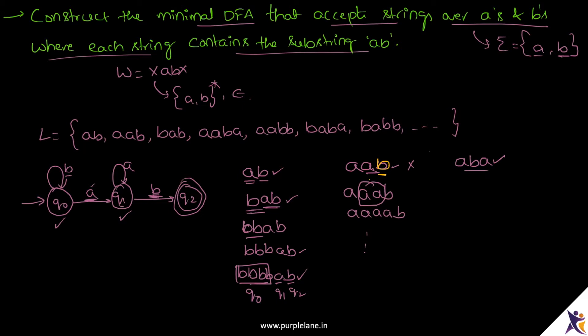On seeing A from Q2 I will stay in Q2, still accepting the string. What if I see a B at Q2? I will still be accepting this string because it contains AB as a substring. So for B also I will stay in Q2. Now Q2 is also completed, and all the states in the DFA are completed.